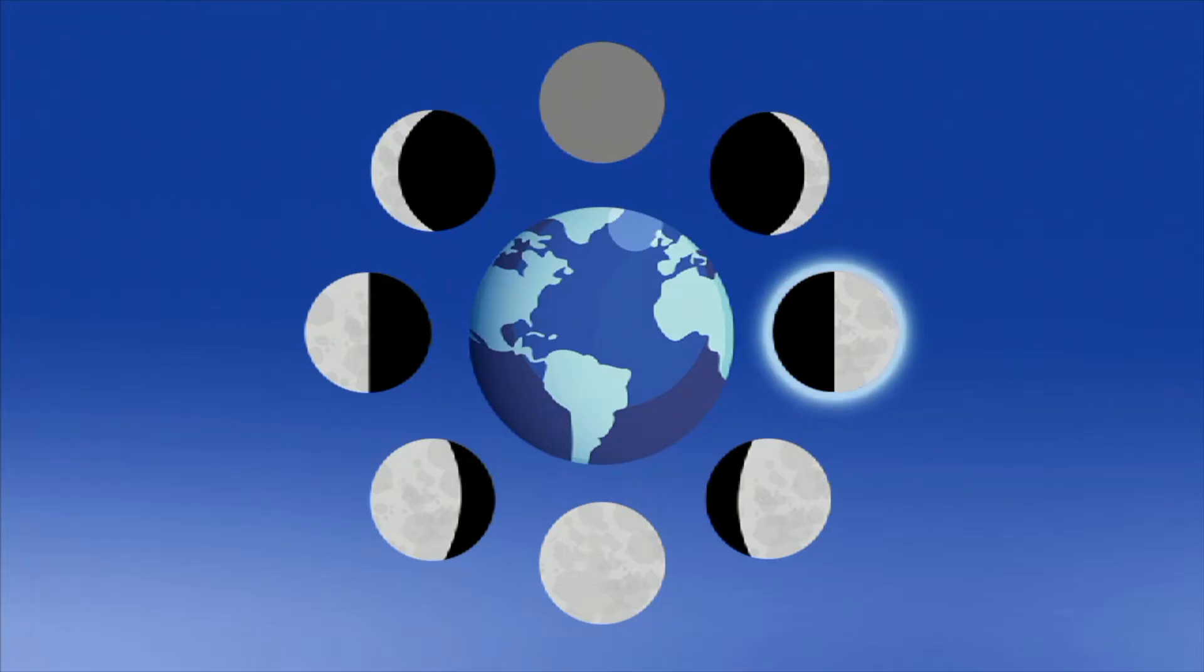The next phase is called the first quarter. The first quarter Moon happens when the Moon has completed one quarter of its orbit around the Earth and appears to us to be half full.